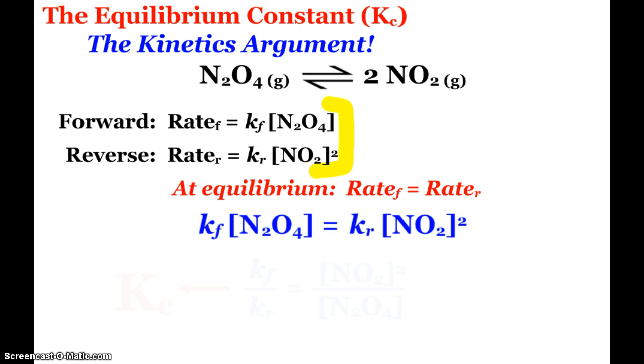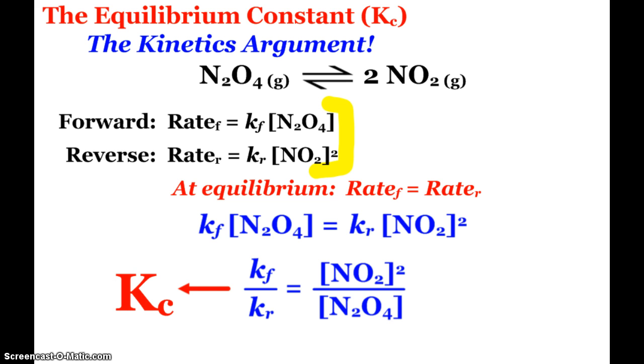But if I set them equal to each other, and then rearrange to have the constants on top of each other to relate them, when I put the constant of my forward reaction over my constant of my reverse reaction, you'll notice that this right here is Kc. So yes,